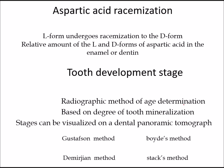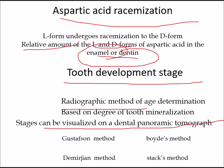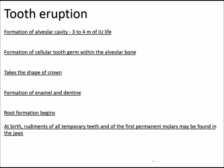Age estimation can be done by aspartic acid racemization — the conversion of L-form to D-form of aspartic acid in dentine or enamel. Age can also be estimated by tooth development stage using a radiographic method based on dental panoramic tomograph, visualizing the tooth mineralization stage. Other methods include Demirjian and Gustafson's methods.